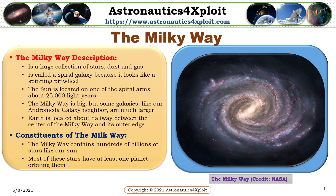The Milky Way is a huge collection of stars, dust and gas. It is called a spiral galaxy because it looks like a spinning pinwheel. The sun is located on one of the spiral arms, about 25,000 light years. The Milky Way is big, but some galaxies, like our Andromeda Galaxy neighbor, are much larger. Earth is located about halfway between the center of the Milky Way and its outer edge. The Milky Way contains hundreds of billions of stars like our sun, and most of these stars have at least one planet orbiting them. The picture shows the Milky Way.